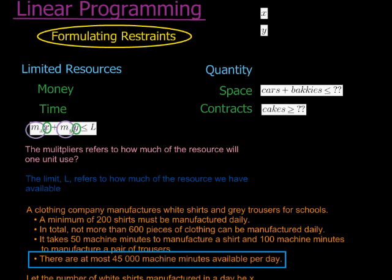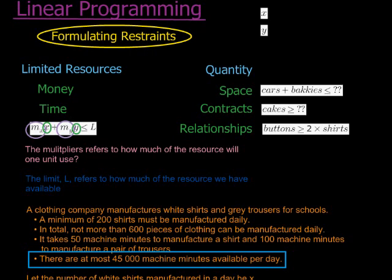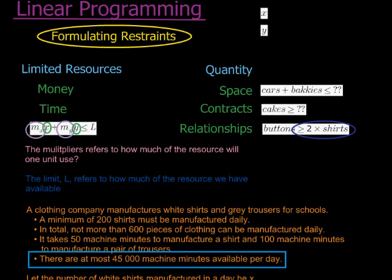Another thing might be relationships. That might sound odd, but what I mean is — take a shirt for example. A shirt must have at least two buttons. When I say at least two buttons, it means two or more than two. At least means greater than or equal to. So for every one shirt I have, I must make at least two buttons. Therefore, the number of buttons must be bigger than twice the number of shirts. We call this relationships because there's some relationship between the number of one and the number of the others that I must make.